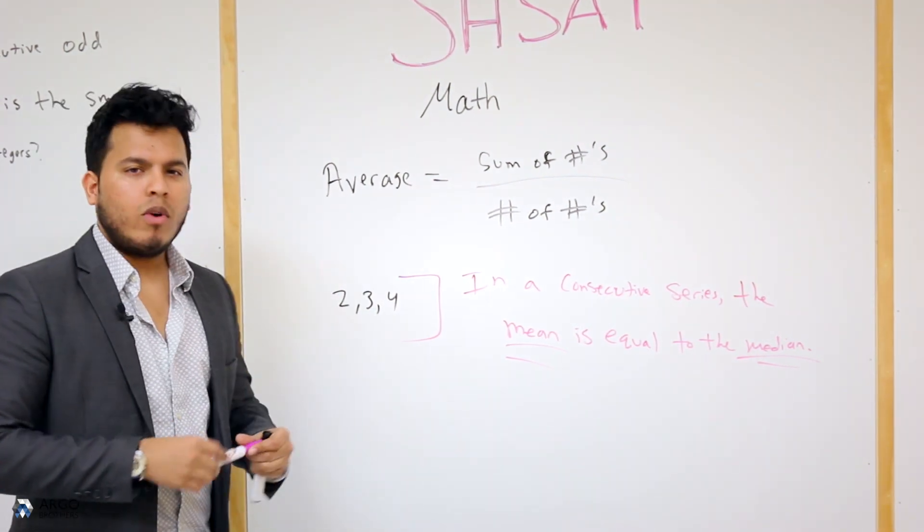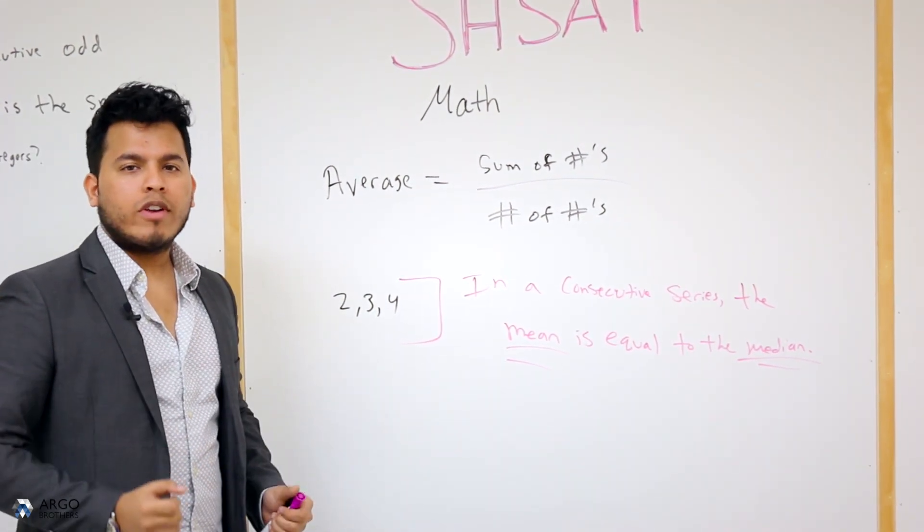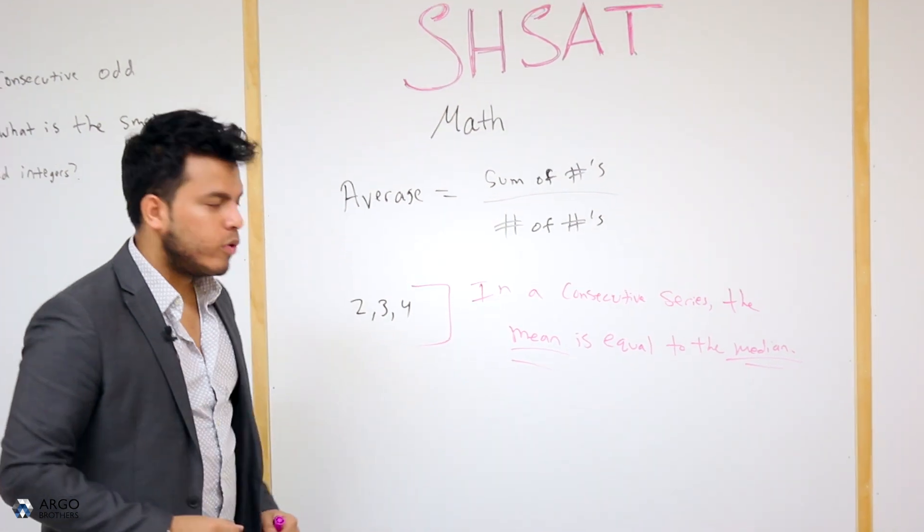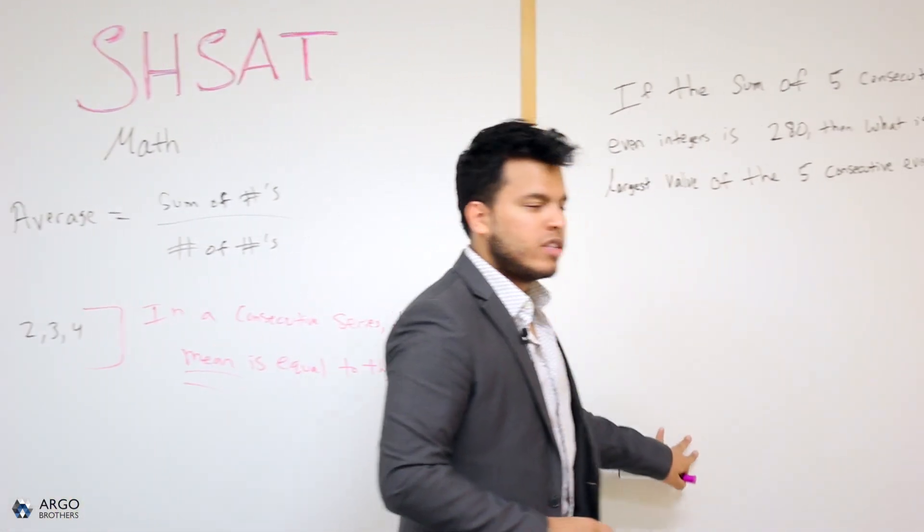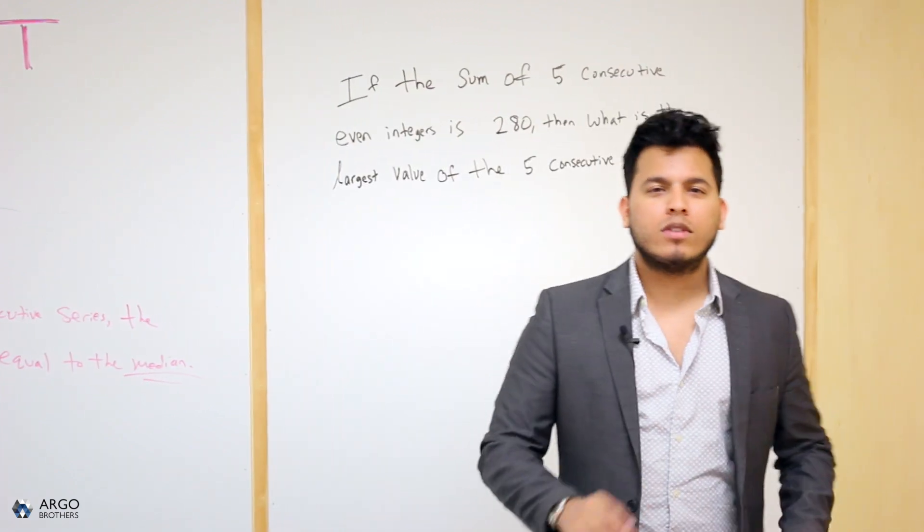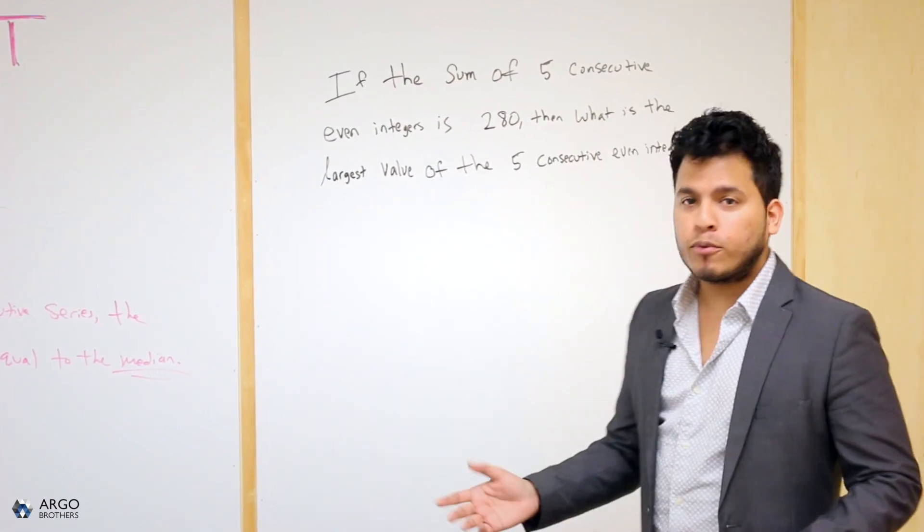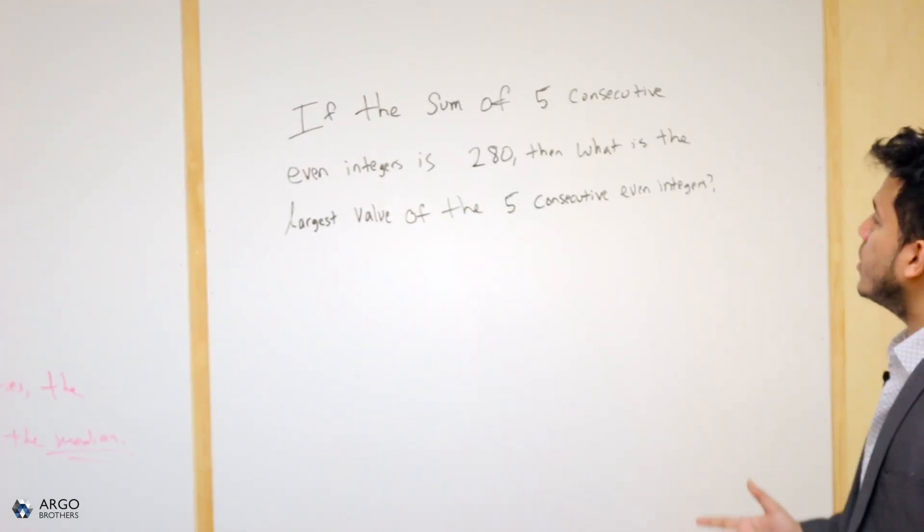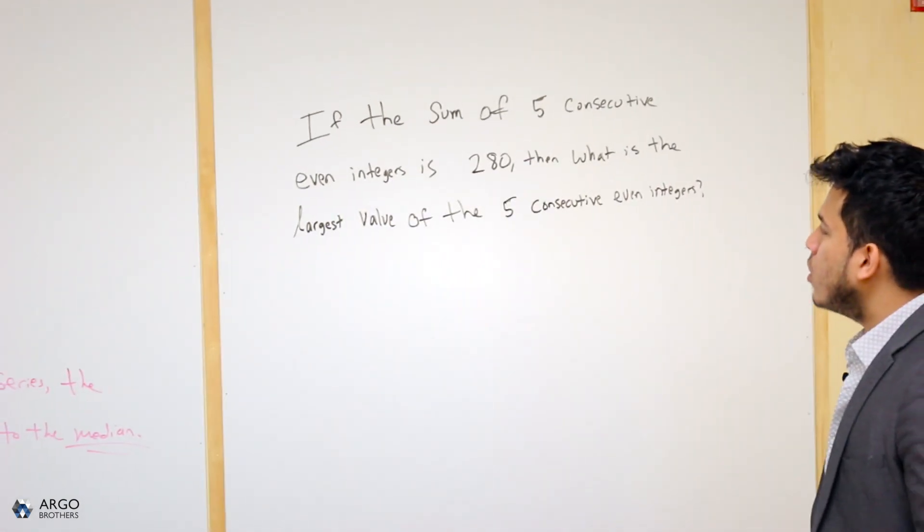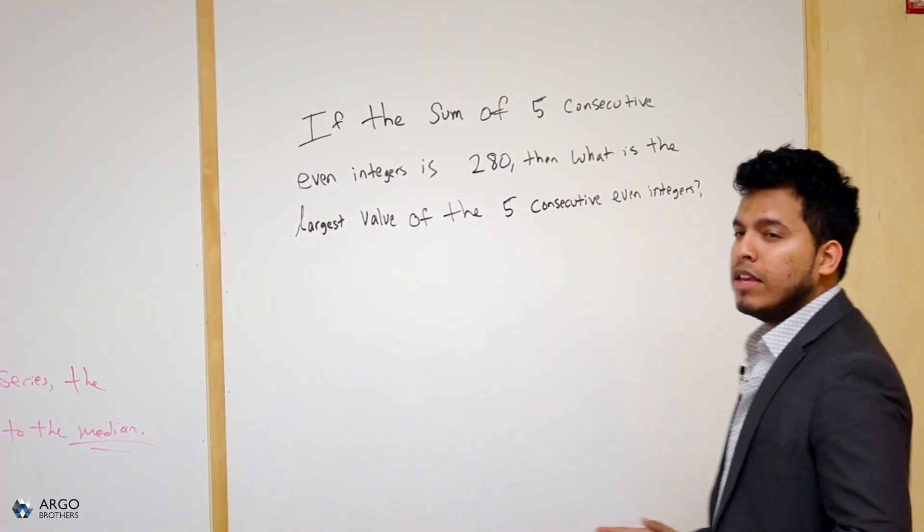Here's my average formula. How do I use this to my advantage, or better yet, what kind of questions can I use this on? So let's go ahead and take a look at this board over here. And this question states, and I'm sure you've seen these kind of questions, especially when you've been taking the mock practice exams. If the sum of five consecutive even integers is 280, then what is the largest value of the five consecutive even integers?